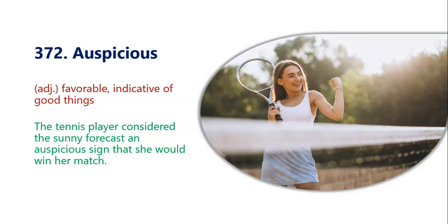Next word is auspicious, means favorable or indicative of good things — mubarak hai is kaam ke liye. Koi bhi cheez ho, woh uske liye favorable ho, mubarak ho. The tennis player considered the sunny forecast an auspicious sign that she would win her match — joh tennis player thi usne samjha tha ki jo sunny forecast hai woh uske liye mubarak hai aur woh jeet jegi apna tennis match. In the picture we can see a happy girl, and sunny weather — maybe she is happy because it is auspicious for her win.